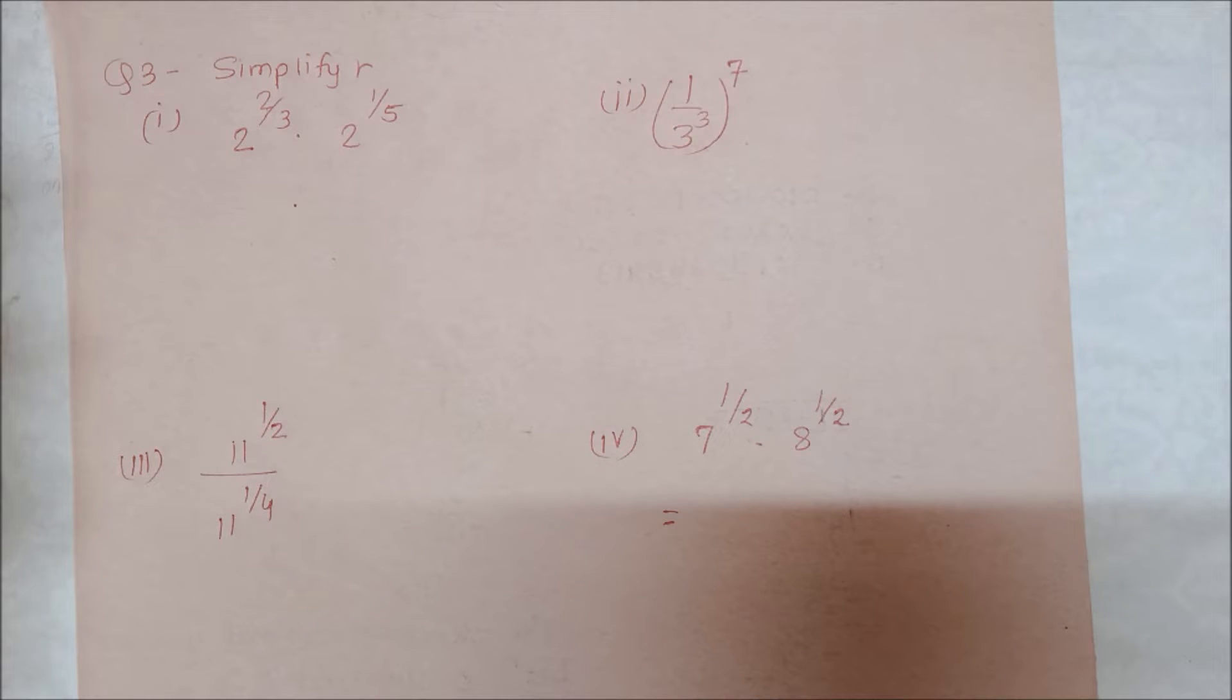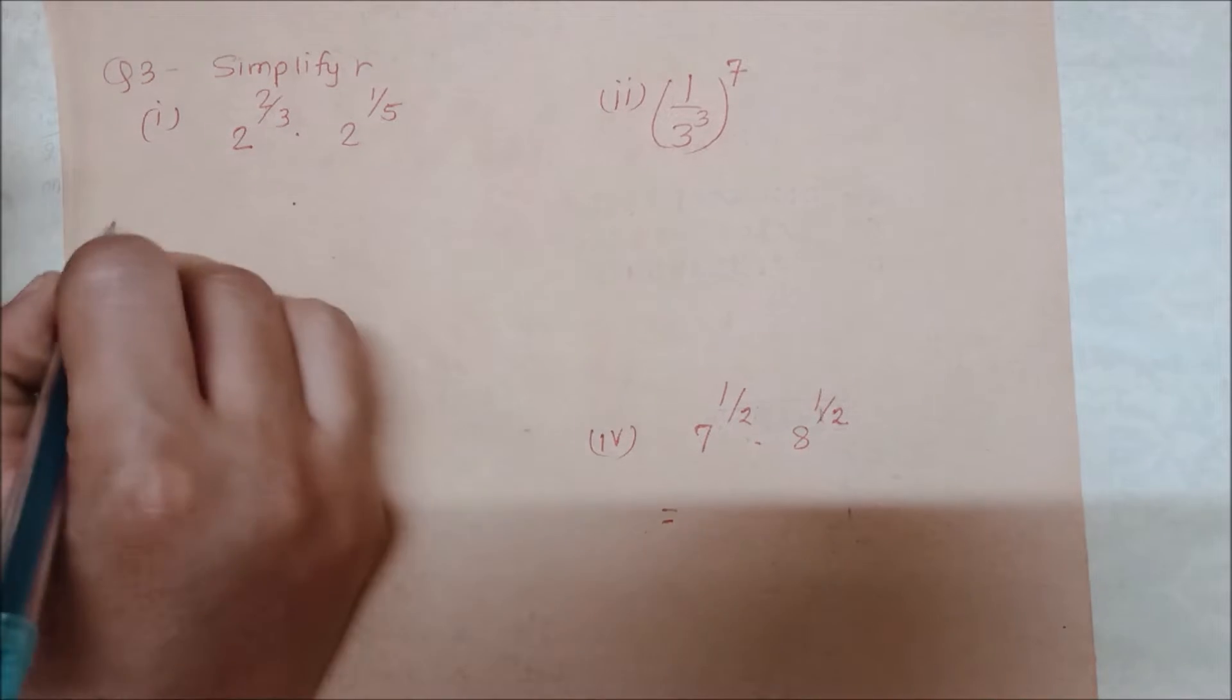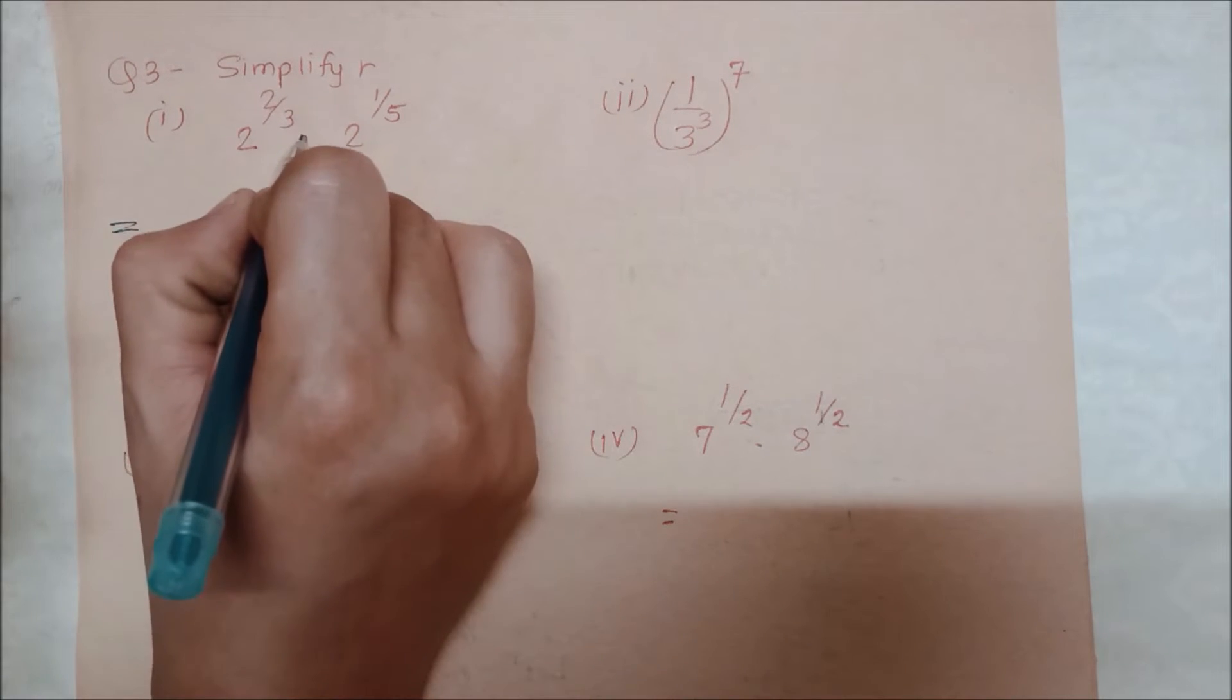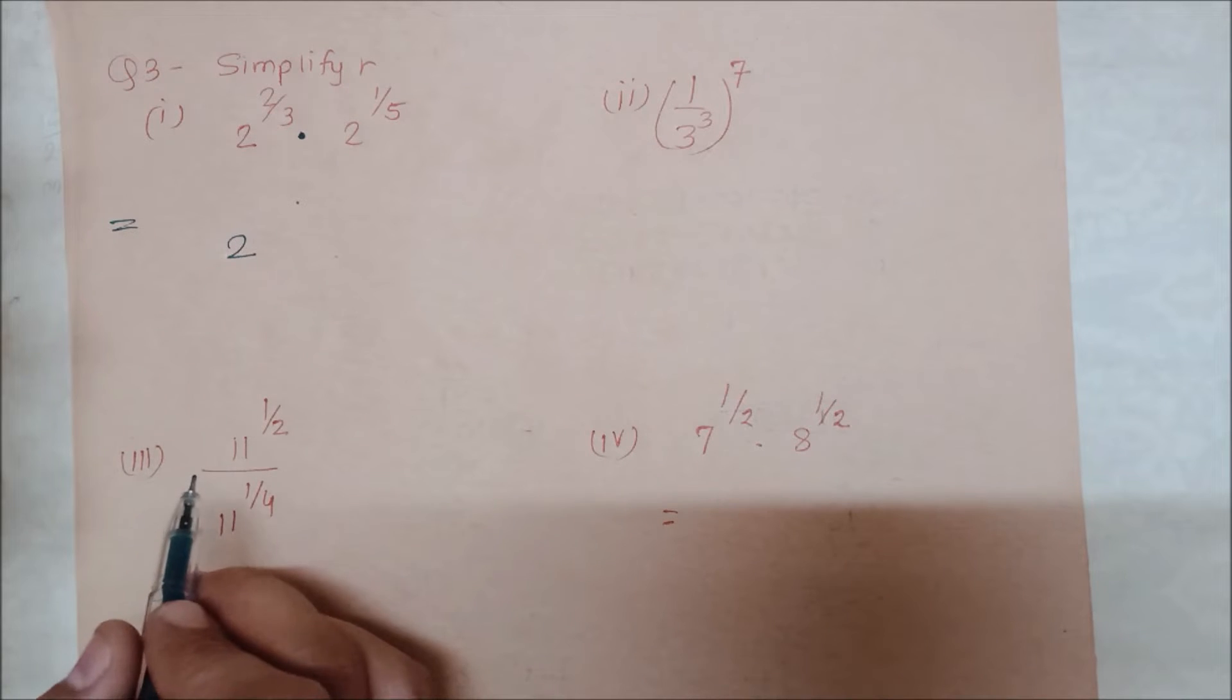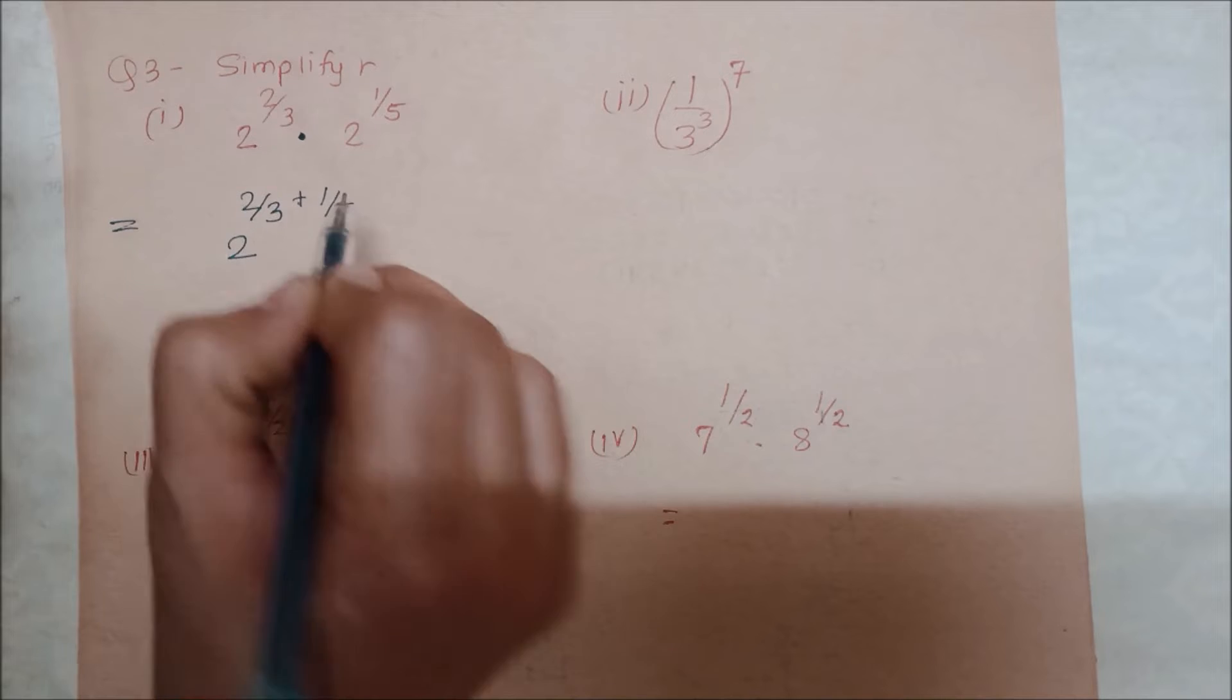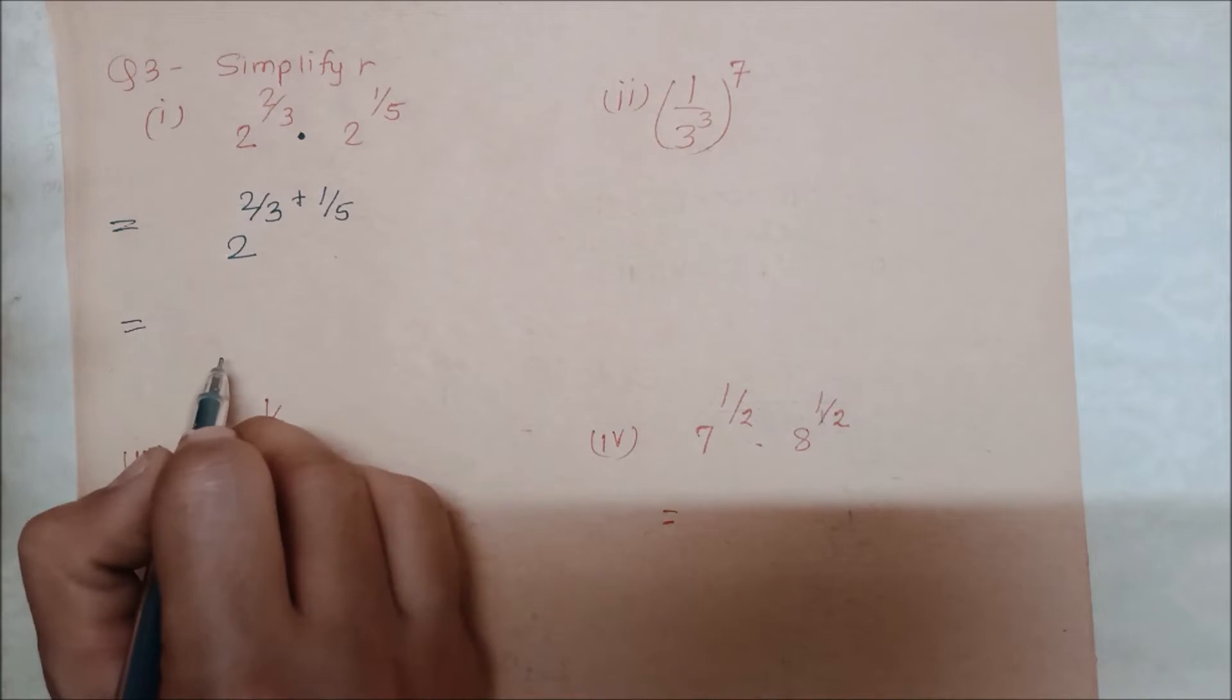Into 2 to the power 1/5. If the base is the same, then our answer will be as it is, and the rest of the power terms will be addition. This is because of the multiplication - it will be addition. This will be 2 upon 3 plus 1 upon 5.